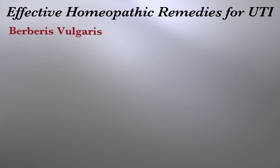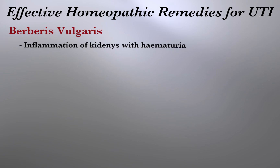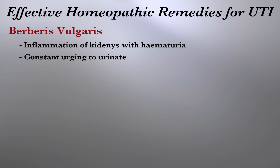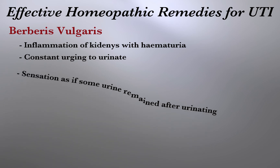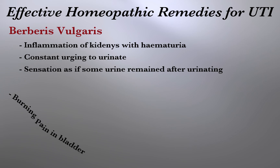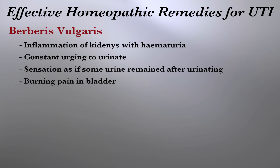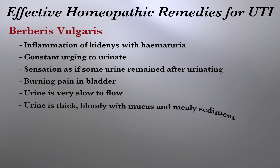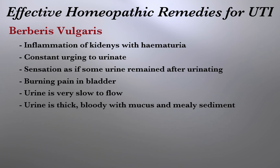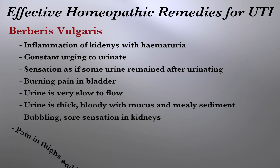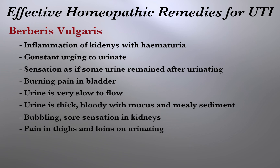The second remedy is Berberis vulgaris. It is useful in inflammation of the kidneys with hematuria. The patient complains of constant urging to urinate and a sensation as if some urine remained after urinating, with burning pain in the bladder. Urine is very slow to flow, thick, and bloody with mucus and mealy sediment. There is a bubbling, sore sensation in the kidney and pain in the thighs and loins on urinating. The urethra burns when not urinating.